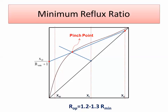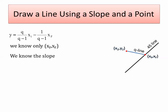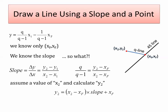Before going to Excel, two mathematical points are important. First, for the q-line: you know the equation and one point (xf, xf), and you know the slope. Since slope equals delta-y over delta-x, and you know one x and one y, you can assume another x2 and calculate y2. Since it's a straight line, any point works — so you now have a second point and can draw the q-line.